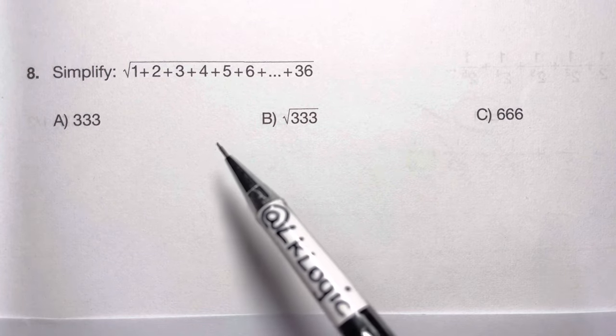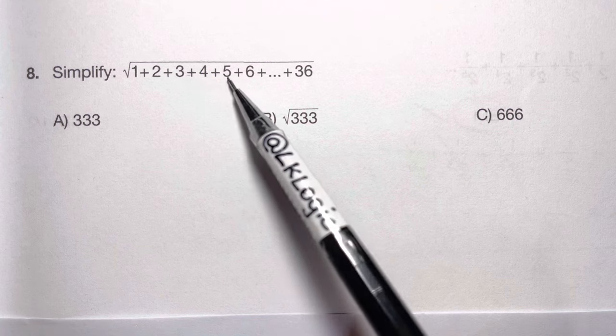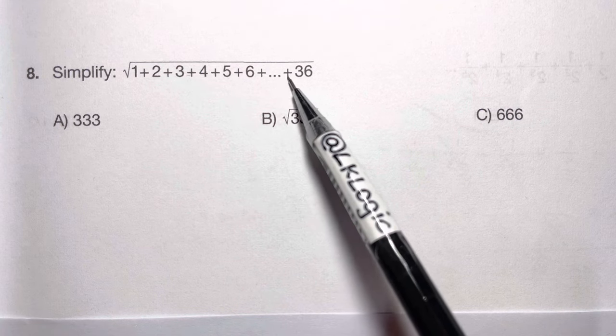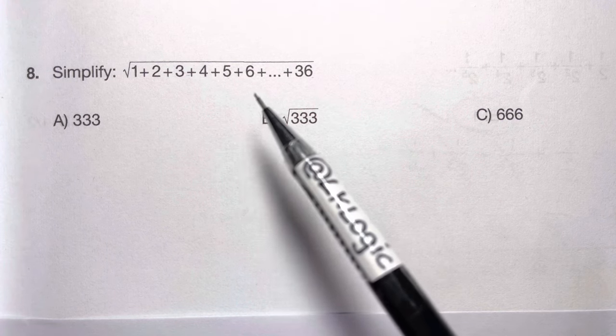Hi everyone, in this Matholimpya question, we're going to simplify square root of 1 plus 2 plus 3 plus 4 plus 5 plus 6 plus so on plus 36. So whenever you have this kind of question, how do you solve it? What is the logic we're going to apply here?